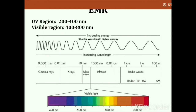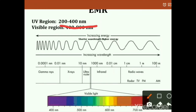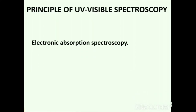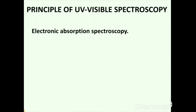The ultraviolet region spans 200 to 400 nanometers, while visible radiation spans 400 to 800 nanometers. Visible light is subdivided into colors: 400 nm is purple, around 500 nm is green-blue, 600 nm is yellow, and 700 nm is red. UV-Vis spectroscopy is a type of electronic absorption spectroscopy, based on the electronic absorption phenomenon.